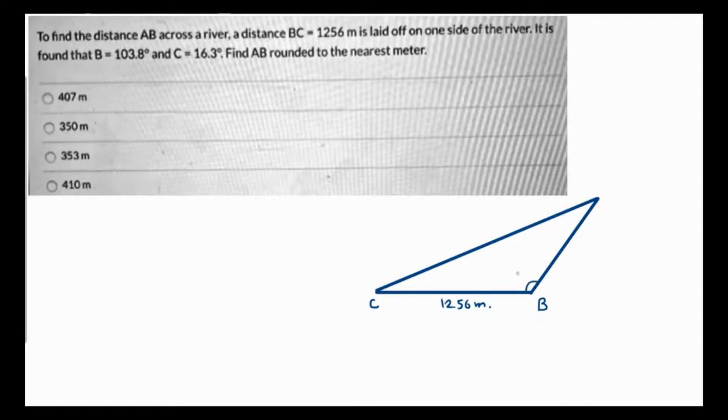Angle B is given as 103.8 degrees and angle C is also given to us as 16.3 degrees. We need to find the value of AB, where AB is small c because it is opposite to angle C. This will be small b because it is opposite to angle B, and this will be small a.